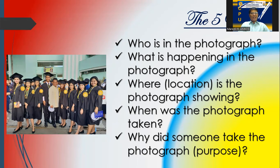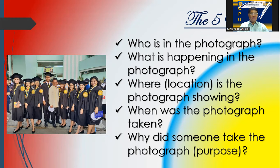To summarize the five W's: why is the reason; when is the time; where is the location or place; what is the event itself; and who refers to the people present. The reason someone takes a photograph is probably for remembrance purposes.